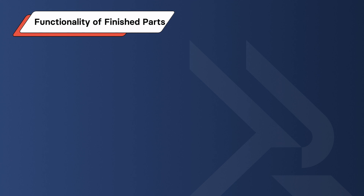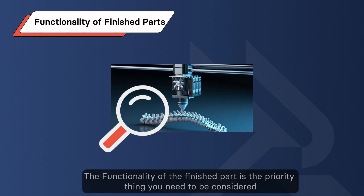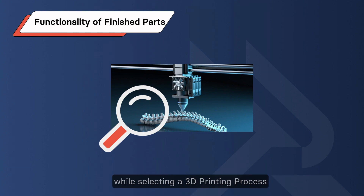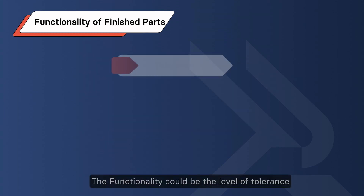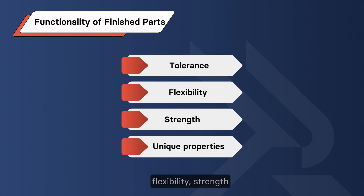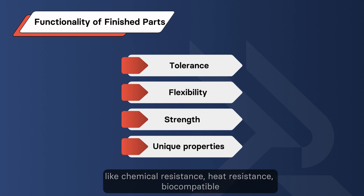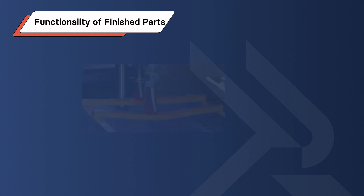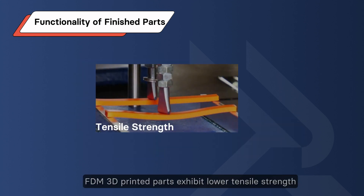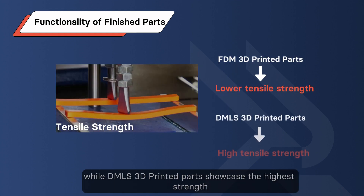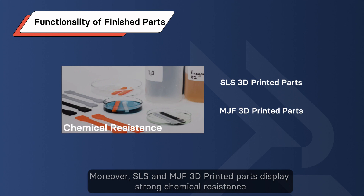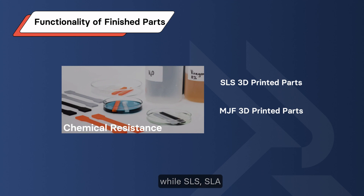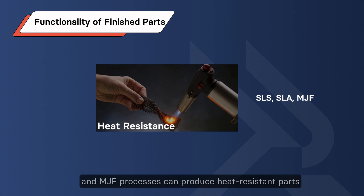Consideration 4: Functionality of the Finished Part. The functionality of the finished part is the priority thing you need to consider when selecting a 3D printing process. Functionality could include the level of tolerance, flexibility, strength, and unique properties like chemical resistance, heat resistance, and biocompatibility. For example, FDM 3D printed parts exhibit lower tensile strength, while DMLS 3D printed parts showcase the highest strength. Moreover, SLS and MJF display strong chemical resistance, while SLS, SLA, and MJF can produce heat-resistant parts.